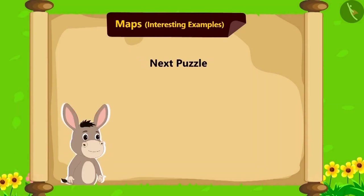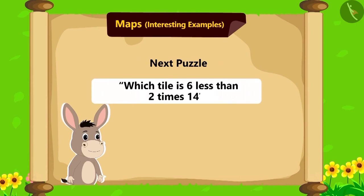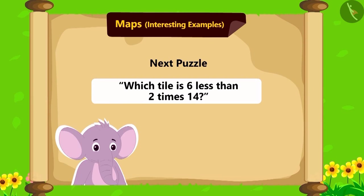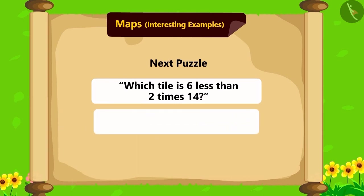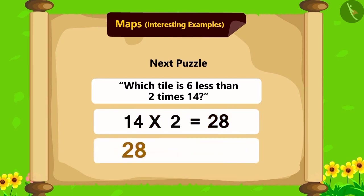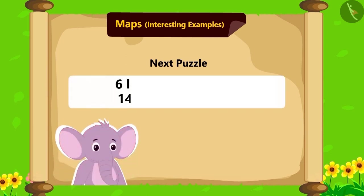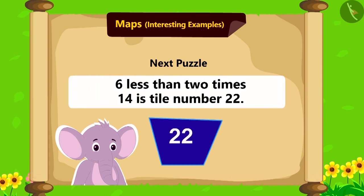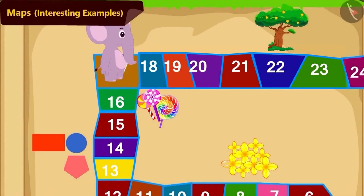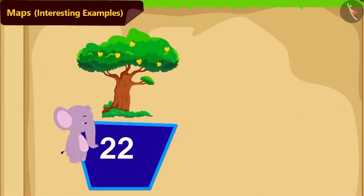Let's see what is Bholla's next puzzle: which tile is six less than two times fourteen? Appu became worried after hearing this puzzle — can you solve it for Appu? If we multiply fourteen with two, we get twenty-eight. Now, subtracting six from twenty-eight is twenty-two. Six less than two times fourteen is tile number twenty-two. With your help, Appu quickly moved to tile number twenty-two.